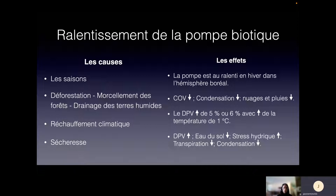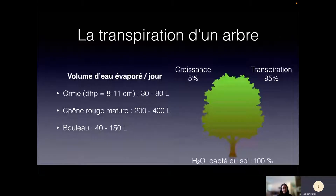C'est simplement l'image que je veux vous garder en tête pour quelques minutes. Dites-vous qu'un arbre, ça transpire énormément. Dans l'eau emmagasinée dans le sol, il y en a 95 % qui sont évaporés dans l'air ; il y en a juste 5 % qui sert à la croissance. Chez un arbre en ville, c'est 30 à 80 litres d'eau par jour. Une érable rouge mature, c'est 200 à 400 litres d'eau par jour qui sont évaporés.